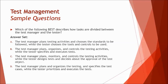Option A says the test manager plans testing activities and chooses the standard to be followed, while the tester chooses the tool and control to be used. We know from our learnings that the selection of tool and test control is also part of the test manager's role, so option A is not correct because there are no tasks relevant to the tester in it.